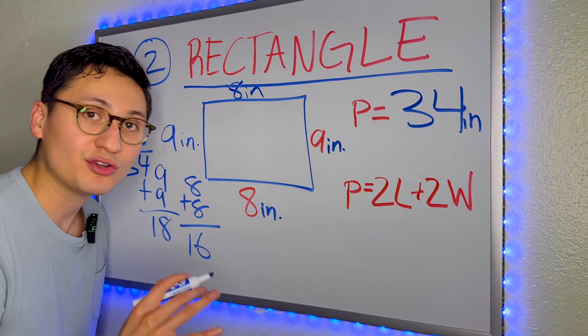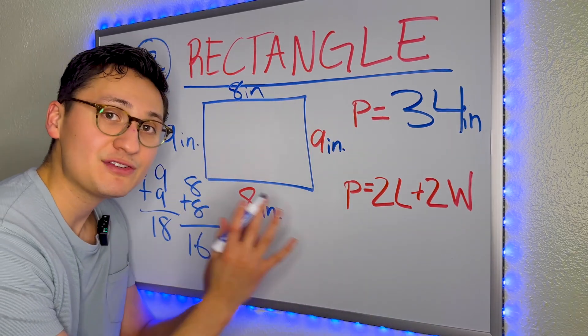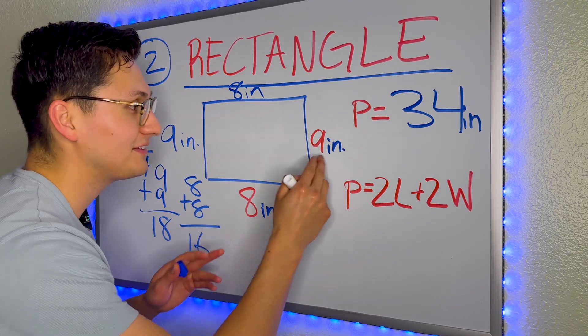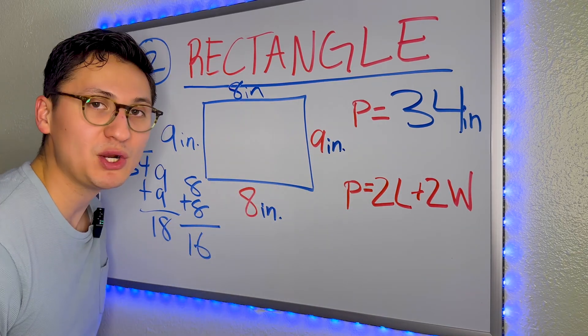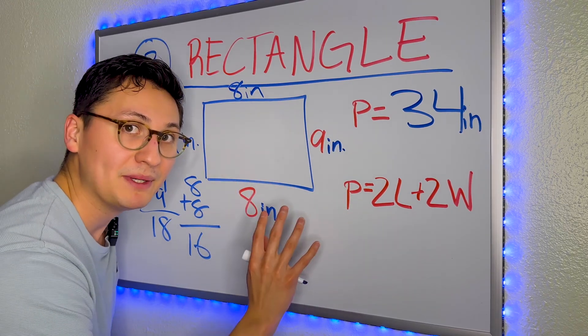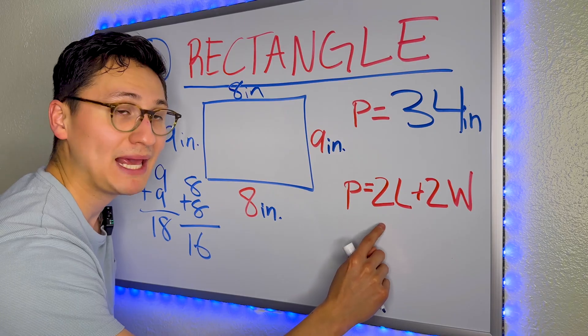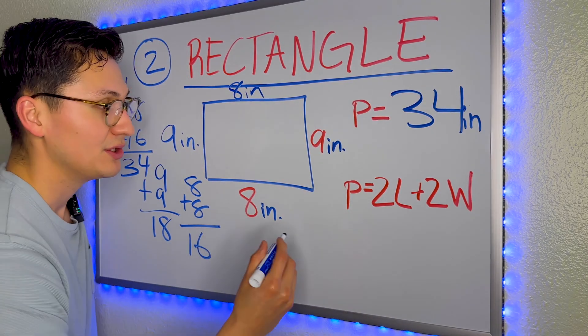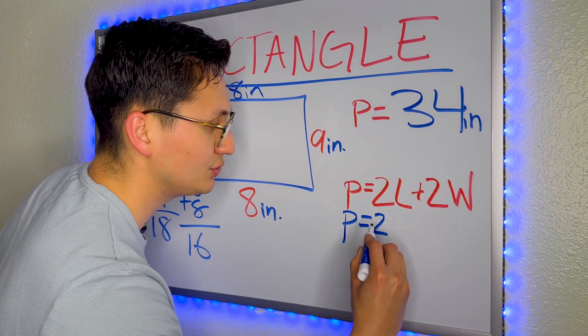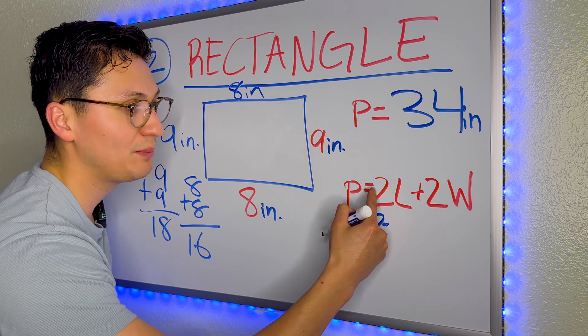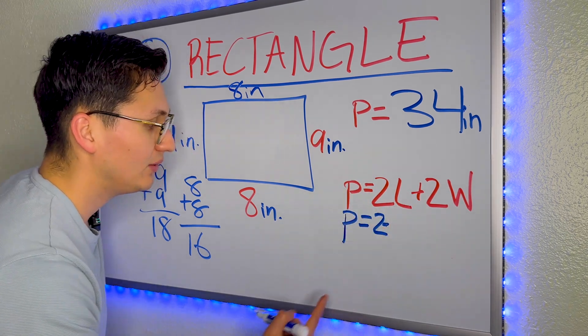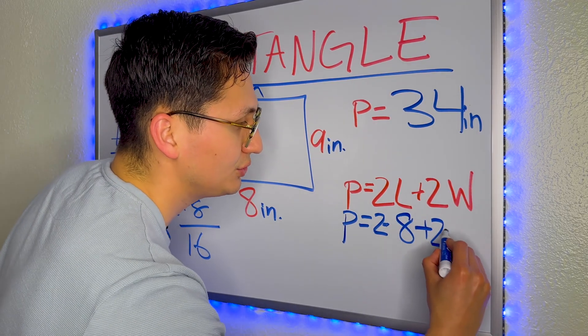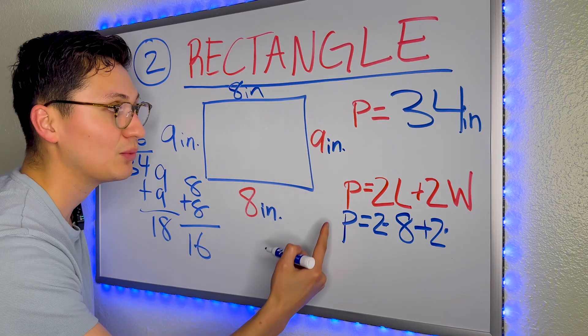And now we can also do it with the formula. This formula is a bit different than the formula for a square because the sides are different. So P stands for perimeter. Two, we're going to have to multiply this two with L. L stands for length. So we have perimeter equals two times, because there's no symbol between the two and the L. The L is the eight. So two times eight plus two times width. The width is right here, which is nine.